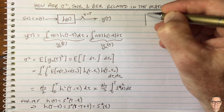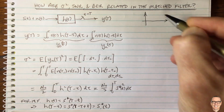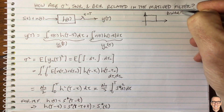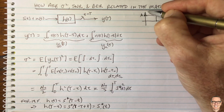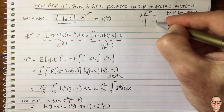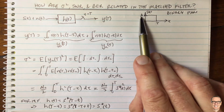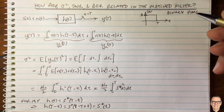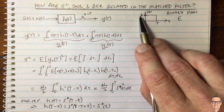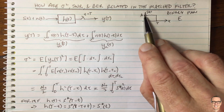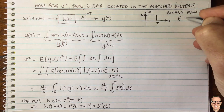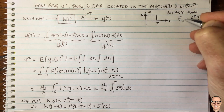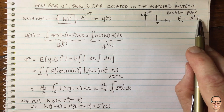Let's now consider an example: binary pulse amplitude modulation (binary PAM). We send a waveform of height +a for duration T to represent a digital one, and −a for duration T to represent a digital zero. The energy in s(t) is the power (a²) times the duration T, so the symbol energy Es equals a²T.